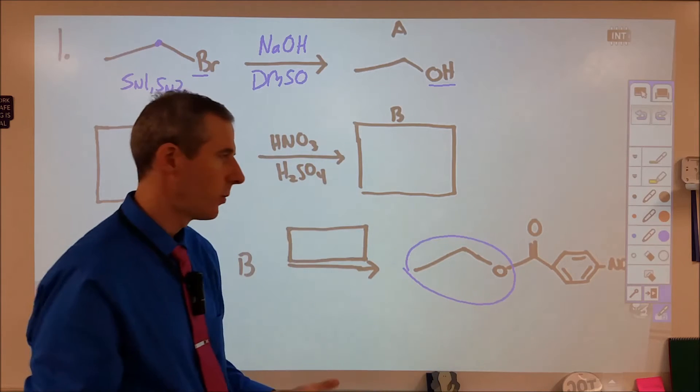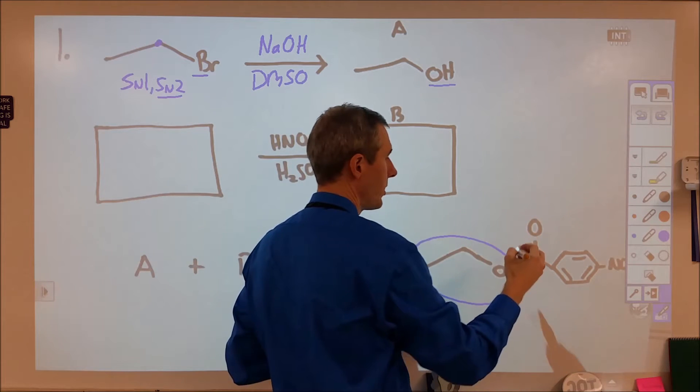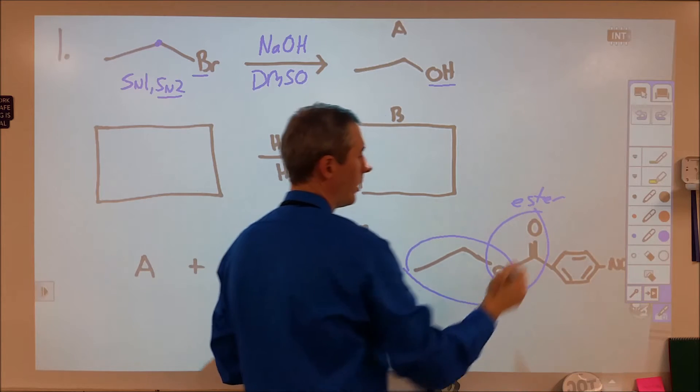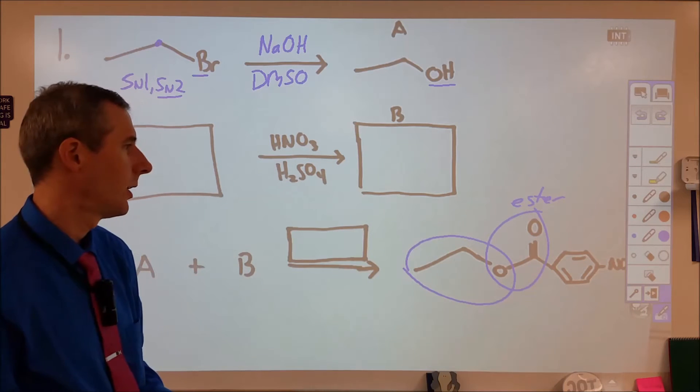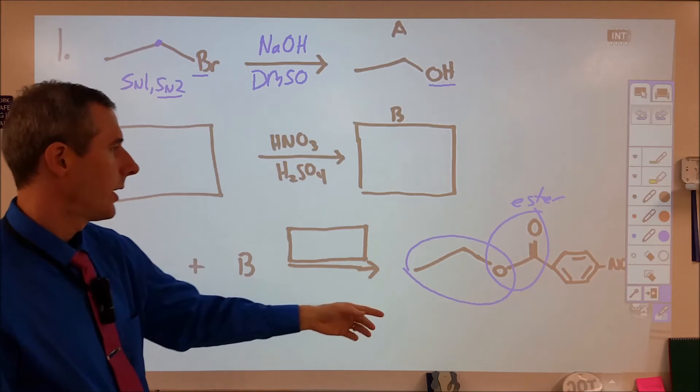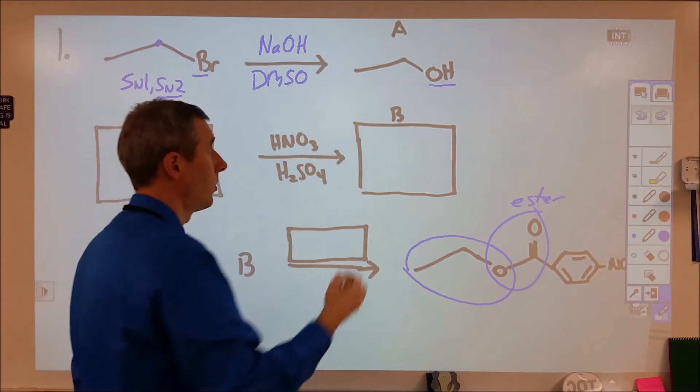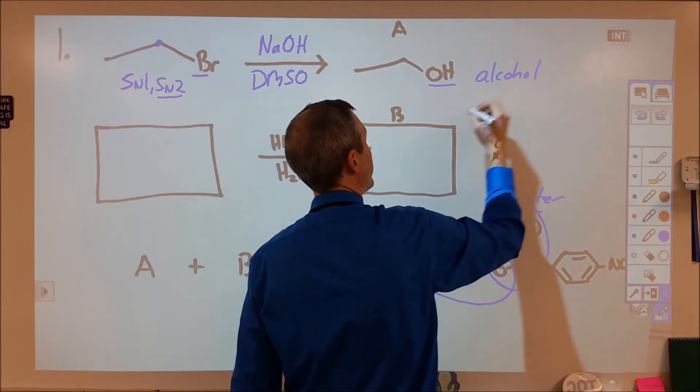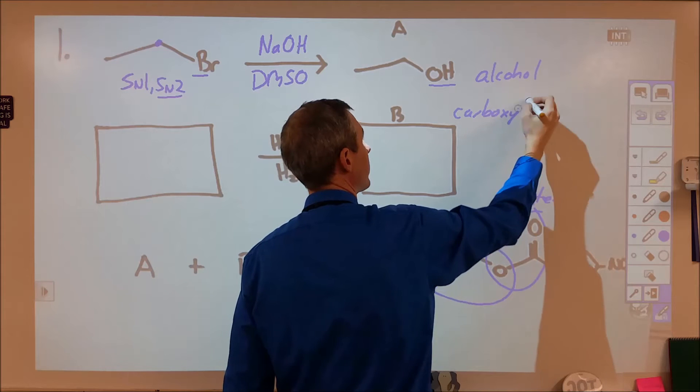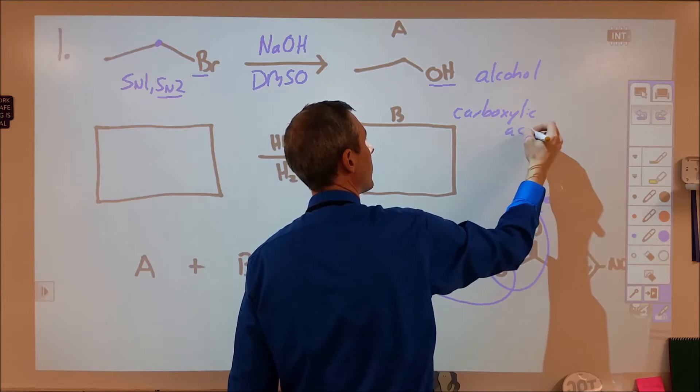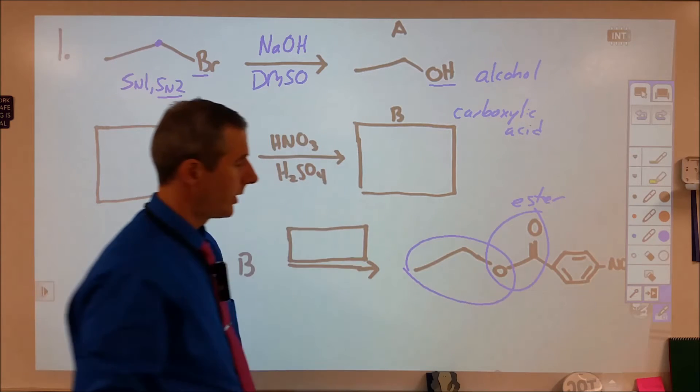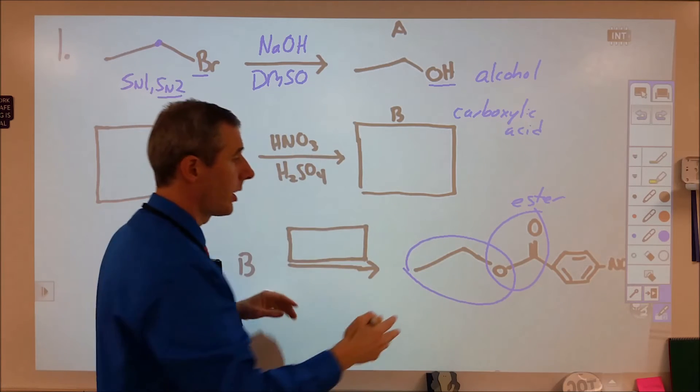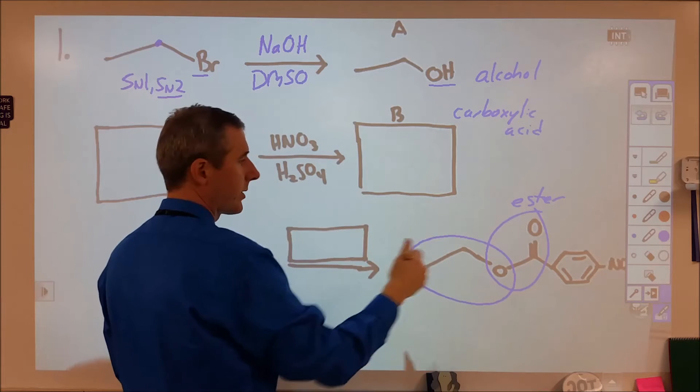We then want to ask ourselves what are we ending with? So we're starting with this, we're adding something else to it, and we're ending up with an ester. We have our ester functional group here, our ester class of molecule here. So getting an ester means you mix an alcohol and a carboxylic acid. Well, we're starting with an alcohol here. That means B must be a carboxylic acid, and then if we look further, we can then take this molecule here and say, okay, well, we're starting with this chunk of it as a carboxylic acid.